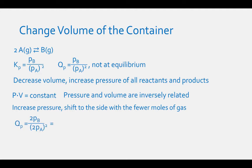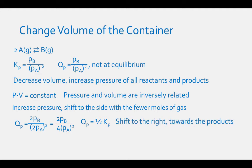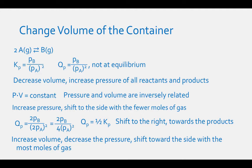If we increase the pressure of the system two-fold, our Qp expression becomes 2 times the partial pressure of B divided by 2 times the partial pressure of A squared, or 2 times the partial pressure of B divided by 4 times the partial pressure of A squared. Therefore, Qp equals one-half the value of Kp. Since Qp is less than Kp, the reaction will shift to the right, toward the side with the fewer moles of gas — the products. If we increase the volume of this reaction mixture, we will decrease the pressure and the reaction will shift toward the side with more moles of gas.